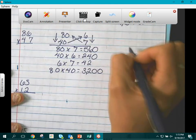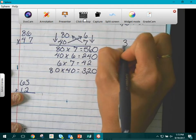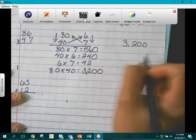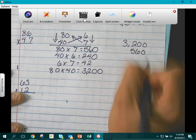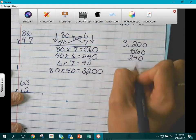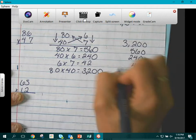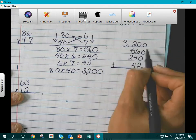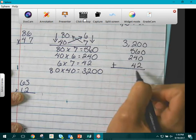We are going to add 3,200, 560, 240, and 42. Everything is lined up in its correct place value.